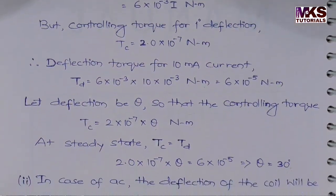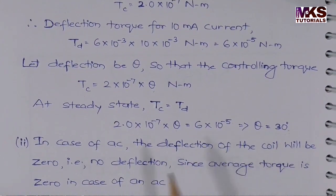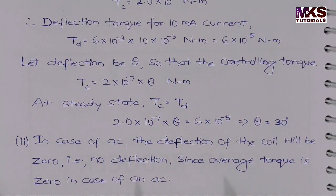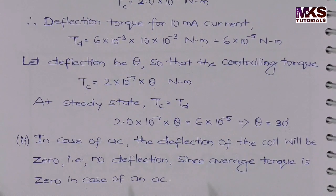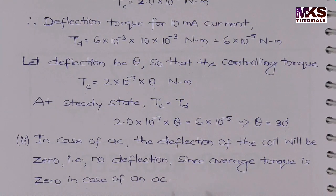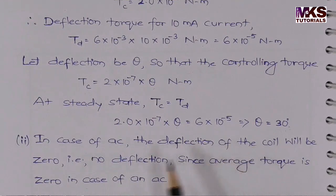For AC, the deflection of the coil will be 0 — that is, no deflection. This is because the frequency causes the waveform to alternate with plus and minus values. In case of AC, the average torque is 0, so there is no net force and therefore no deflection occurs.